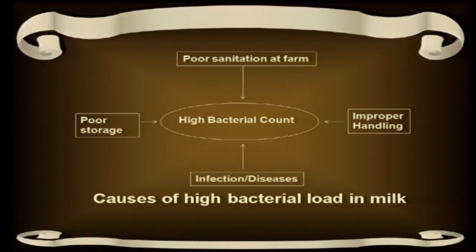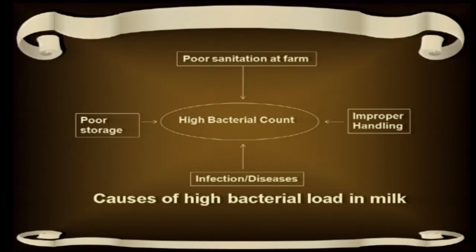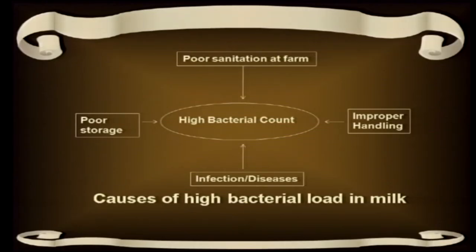It is the growth of bacteria that mainly affects quality. High bacterial count can be due to the animal itself being diseased — that is infectious disease — improper handling, poor sanitation at the farm, and poor storage. If these four pillars have a weak link, the bacterial count will be high and the milk will be of poor quality. So if we can control these four points — the animal should be healthy, the environment should be proper, sanitation at the farm should be good, handling should be proper — and ensure proper cold storage, the quality will be maintained. Chilling of milk is important.